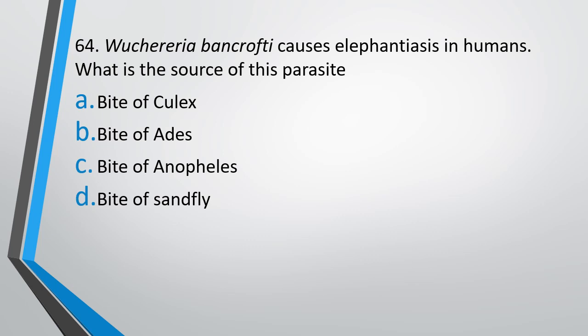Question number 64. Wuchereria bancrofti causes elephantiasis in humans. What is the source of this parasite? Options: bite of Culex, bite of Aedes, bite of Anopheles, bite of Sandfly. The correct answer is option A — bite of Culex mosquito causes elephantiasis or filariasis.